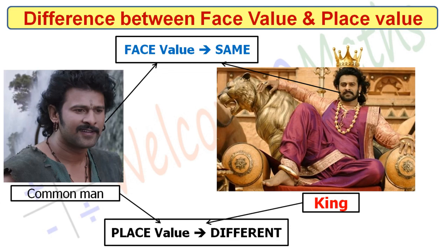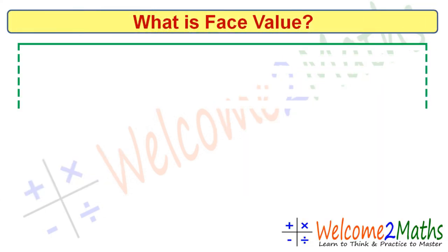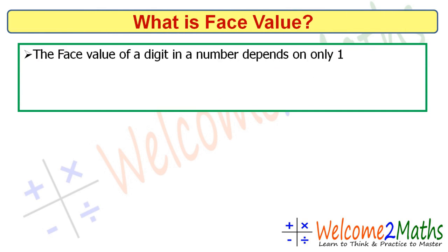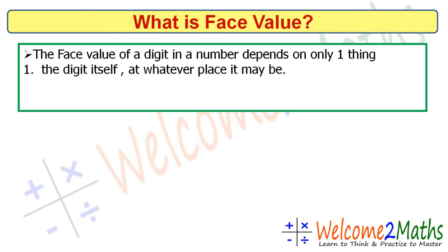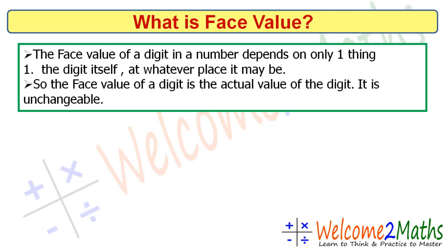So now let's learn what is face value and place value. We start with face value. The face value of a digit in a number depends on only one thing — that is the digit itself, at whatever place it may be. So the face value of a digit is the actual value of the digit and it's unchangeable, meaning it will remain the same all the time.